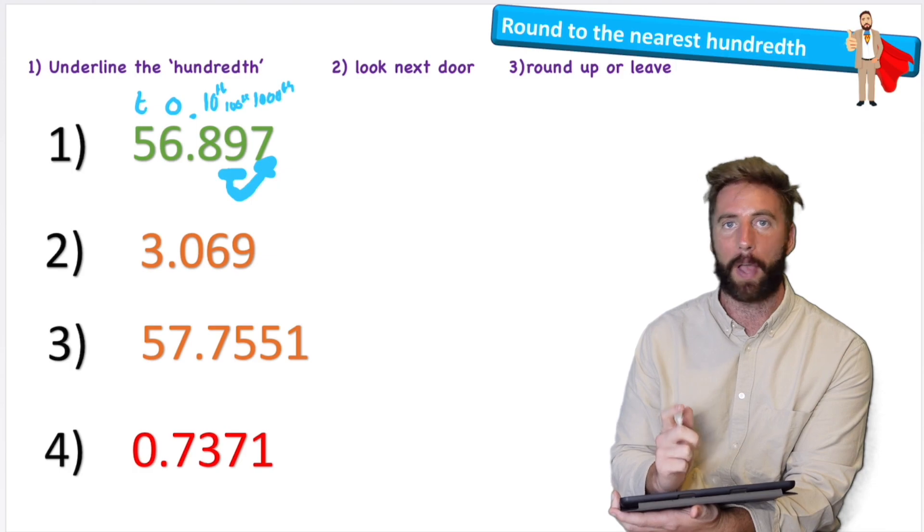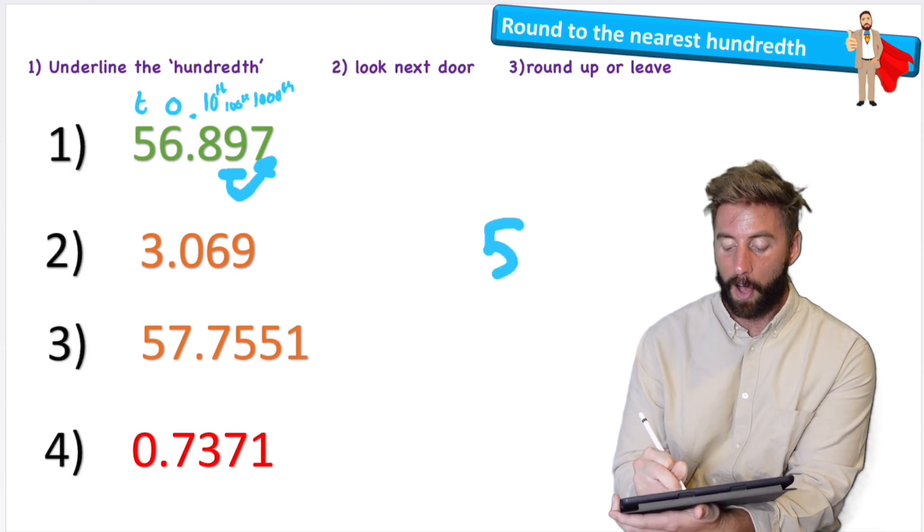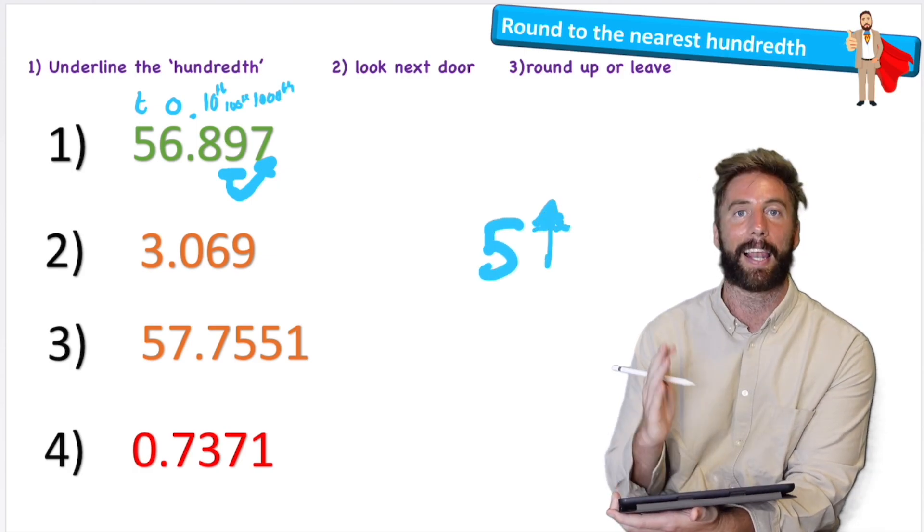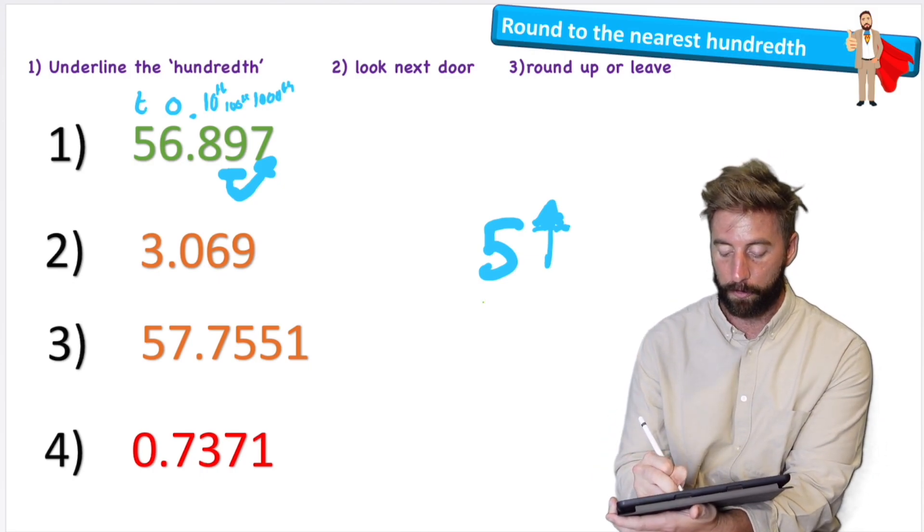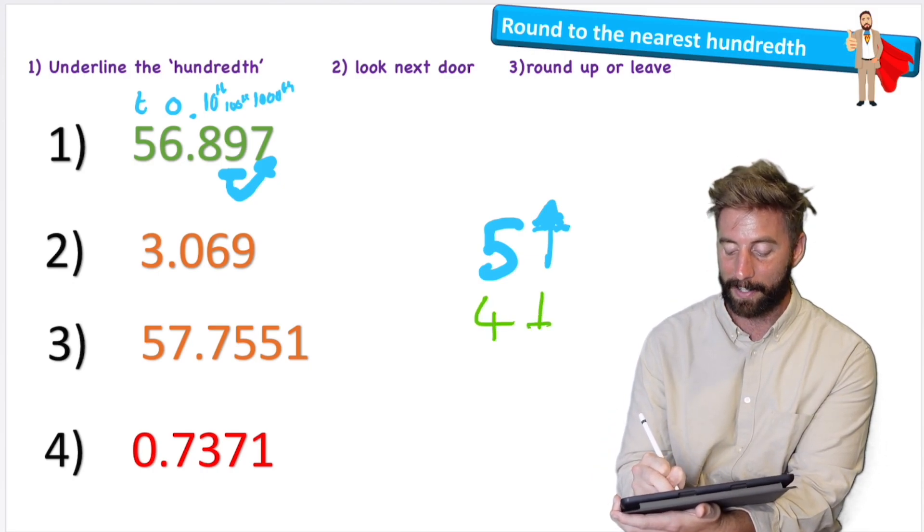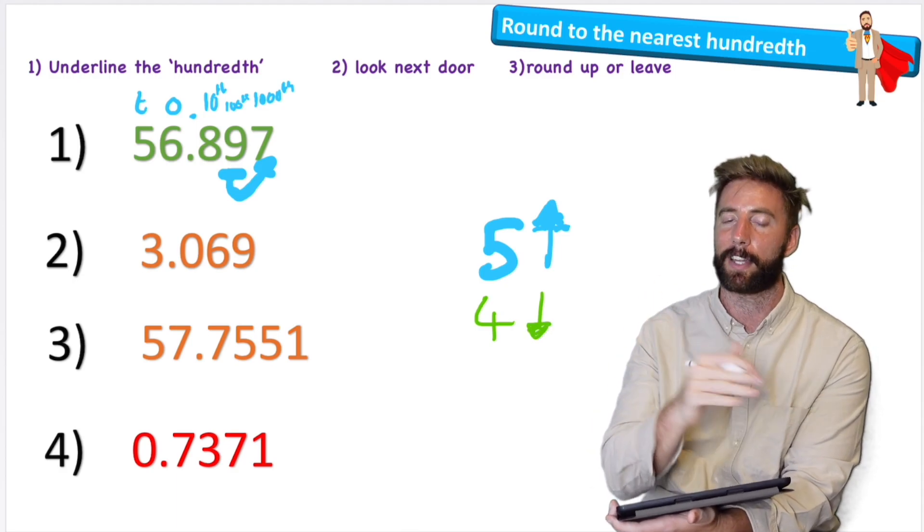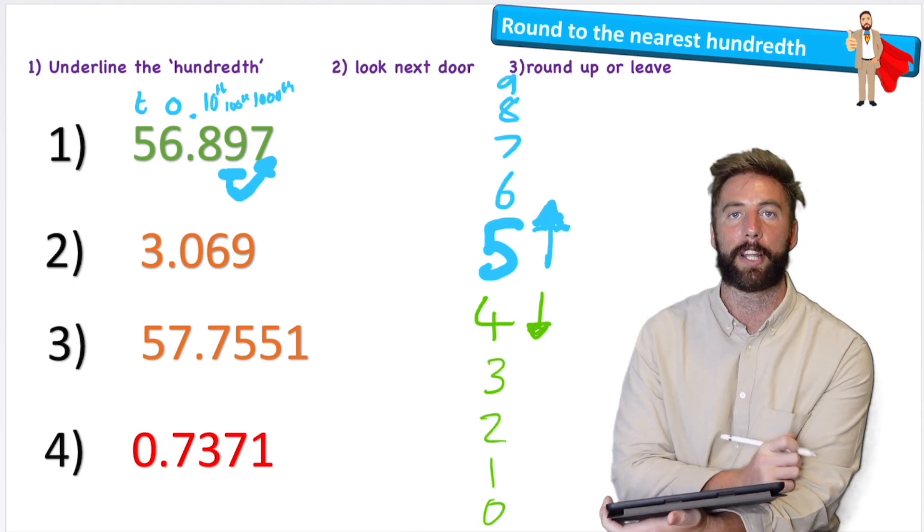But how do we do that? Well, luckily we have a little rhyme. We say five or more let it soar, which means round it to the next number. Or four or less let it rest, keep it as the number it is. So I'm just going to fill the rest of the numbers in and now I'm ready to start.